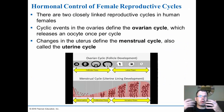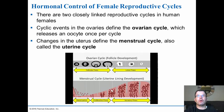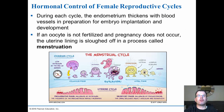Females have a more complex hormonal cycle involving two coordinated cycles: the ovarian cycle and the menstrual (uterine) cycle. The ovarian cycle involves the follicular phase — follicle development and egg release — and the luteal phase after ovulation. The menstrual cycle tracks the uterine lining through menstruation, the proliferative phase, and the secretory phase, preparing the uterus to accept a developing embryo.